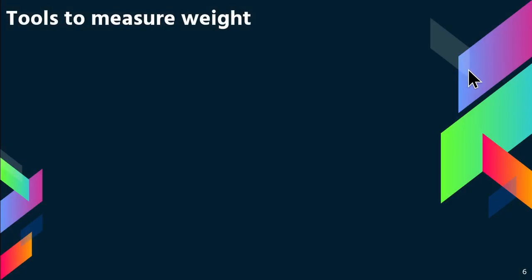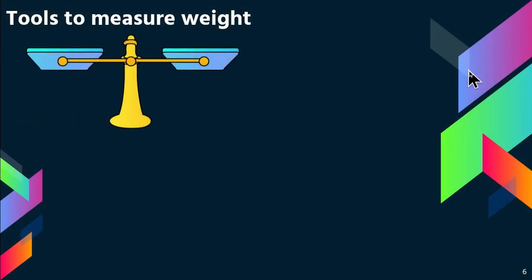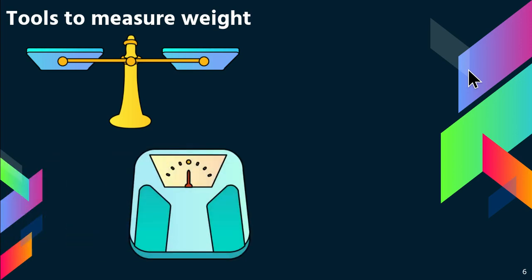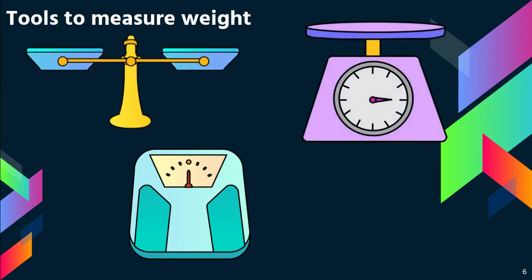The tools that we use to measure weight: you can use a pan balance, which tells us which one is heavier. This is called a scale, and a scale gives us a number to tell us how many pounds something weighs. And this is also a scale — you would use this for lighter things, and it would also tell us how much something weighs.